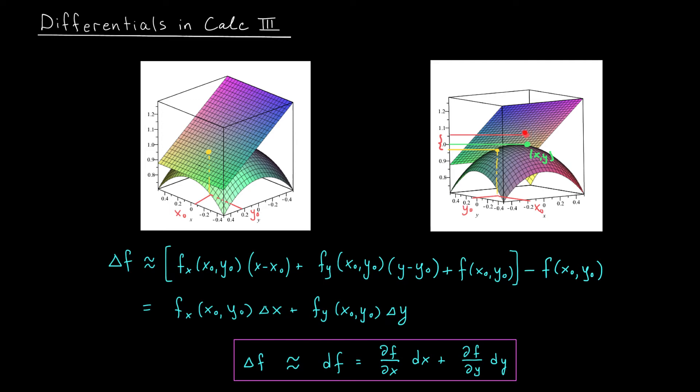The value of the tangent plane at this point (x, y) is fₓ(x₀, y₀) times (x minus x₀) plus fᵧ(x₀, y₀) times (y minus y₀) plus f(x₀, y₀). This is just from our tangent plane equation. Then we have to subtract the value of the tangent plane at this point (x₀, y₀), so we take off f(x₀, y₀). That leaves us with just these first two terms that you see here.